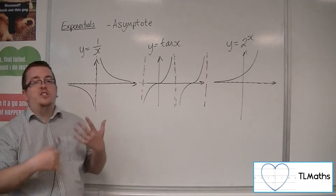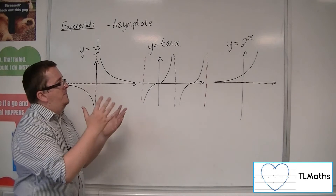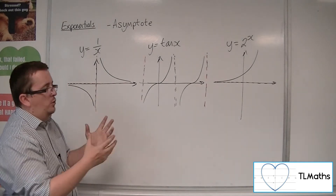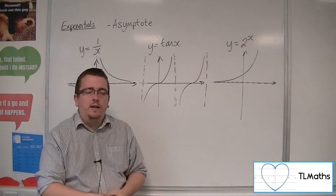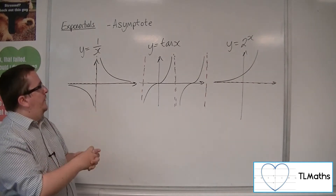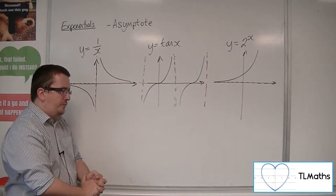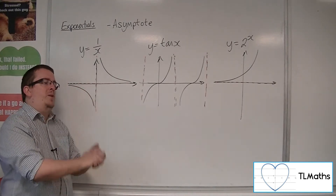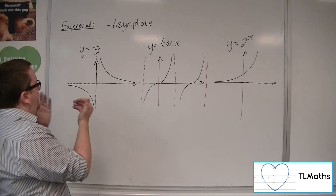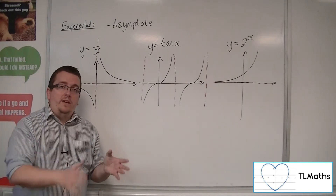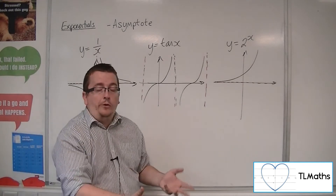So how can we describe these? Asymptotes, in general, are lines that the curve tends towards. That doesn't mean an asymptote has to be a line — it doesn't have to be just vertical or horizontal. It can be oblique, so at an angle, and you could also have asymptotes that are curved.